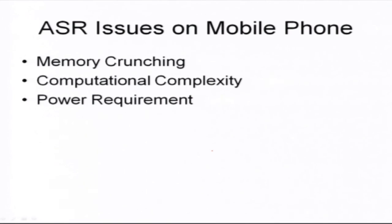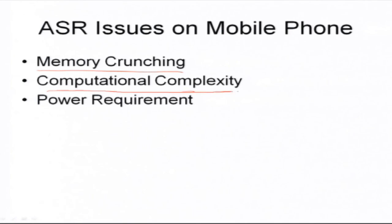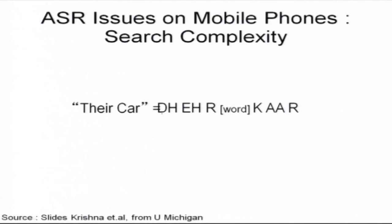What are the issues for speech recognition on a cell phone? The main problem is memory crunching — cell phones have limited memory and therefore cannot do heavy processing. The problem of computational complexity is always present, requiring more computational power than the cell phone has. Then there is the power requirement — cell phones have batteries that do not last long. Let us take a simple example to illustrate the issues involved.